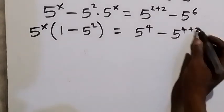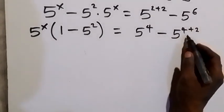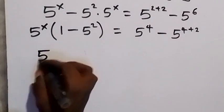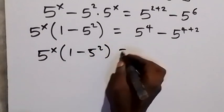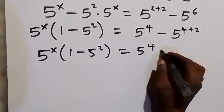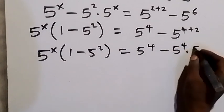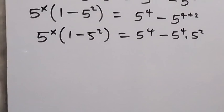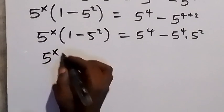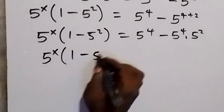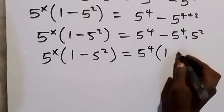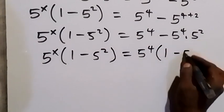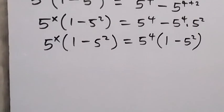In the next step we can rewrite this as 5 raised to power 4 times 5 raised to power 2. So we have 5 raised to power x times 1 minus 5 squared equals 5 raised to power 4 minus 5 raised to power 4 times 5 squared. Then also from here let's factor out 5 raised to power 4, so this becomes 5 raised to power x times 1 minus 5 squared equals 5 raised to power 4 times 1 minus 5 squared.